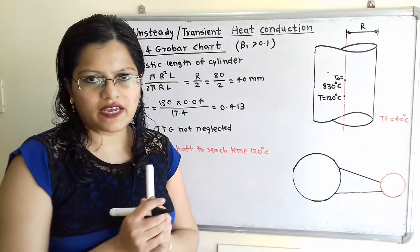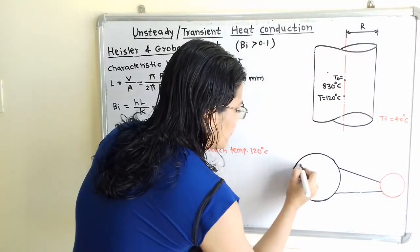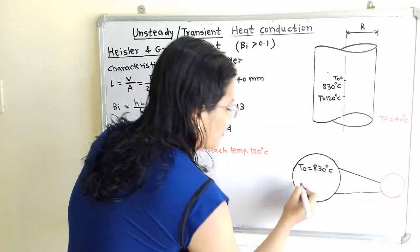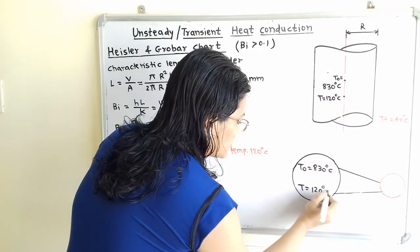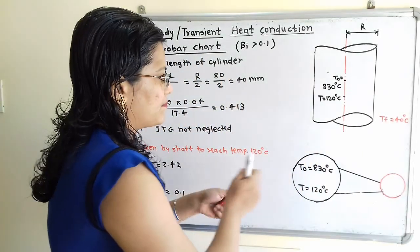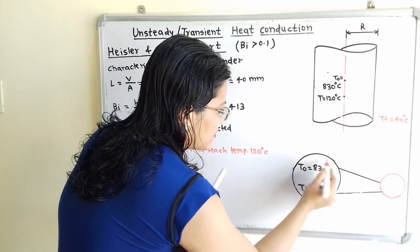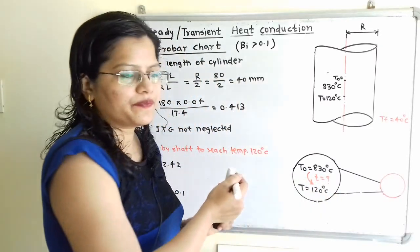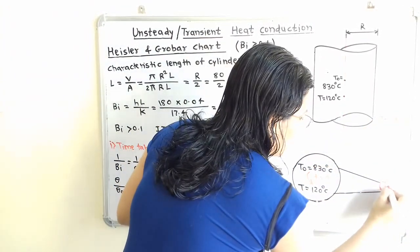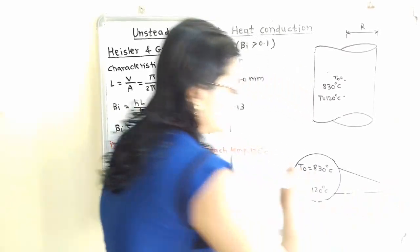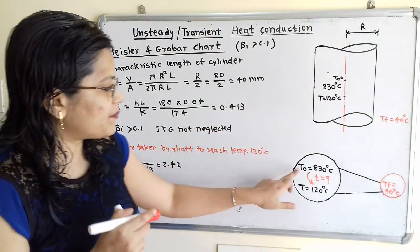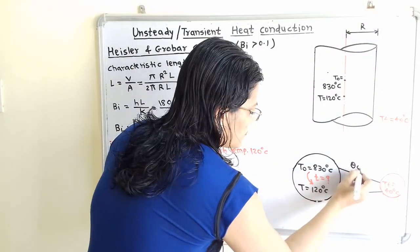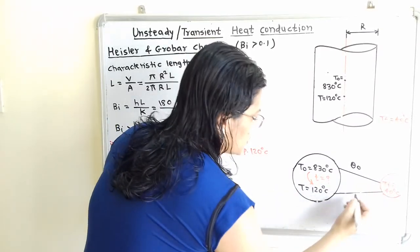From the diagram, the initial temperature T0 = 830°C must fall to T = 120°C, and we need to find the time T during which this occurs. The surrounding temperature Tf = 40°C. The difference between T0 and Tf gives us theta0, and the difference between T and Tf gives us theta.